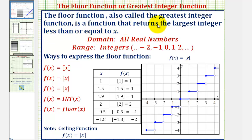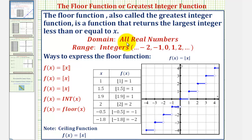The floor function, also called the greatest integer function, is a function that returns the largest integer less than or equal to the input x. Therefore the domain, or set of inputs, would be the set of real numbers, and the range, or set of outputs, would be the set of integers.